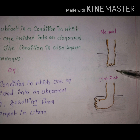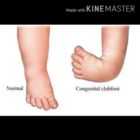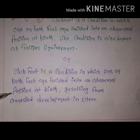In the diagram, you can see the normal feet standing straight, and in clubfoot the feet are twisted internally. The second definition: clubfoot is a condition in which one or both feet are twisted into an abnormal position at birth, resulting from arrested development in the uterus. It results from arrested development in the uterus — you will understand what that means in the pathophysiology section.